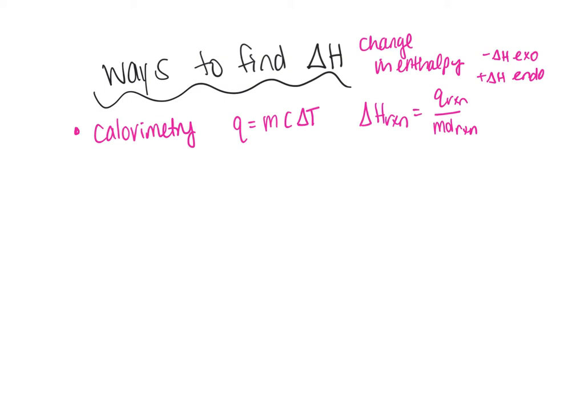So that's one way to find delta H. Another way is with standard heats of formation. That is going to give you the delta H of a reaction, and what you have to do is add up, sum up, all of the standard heats of formation. Notice my little F subscript and then standard conditions, which is different than STP for gases.